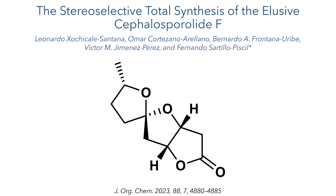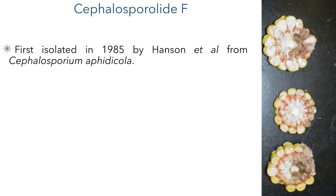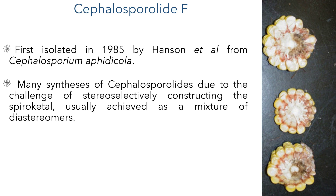This work, the stereoselective total synthesis of the elusive cephalosporolite F, was published in JOC by the group of Sartio Pesquil. Cephalosporolite F was first isolated in 1985 by Hansen et al. from Cephalosporium aphidicola. It is a member of a large family of cephalosporolites, many of which have been targets for total syntheses due to the challenge of stereoselectively constructing a spirochetal. Most of the syntheses reported in the literature have been achieved as a mixture of diastereomers.